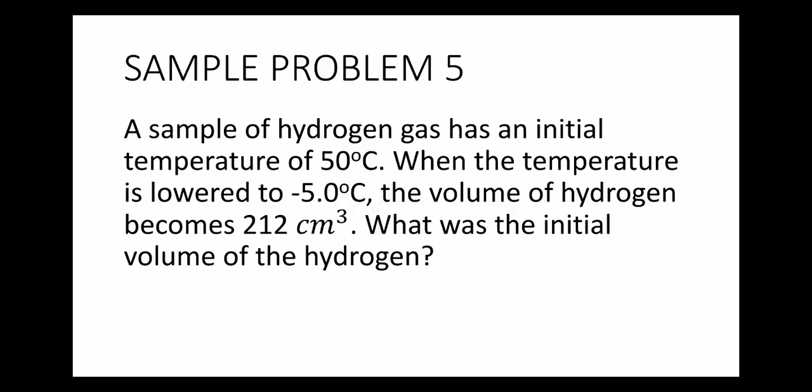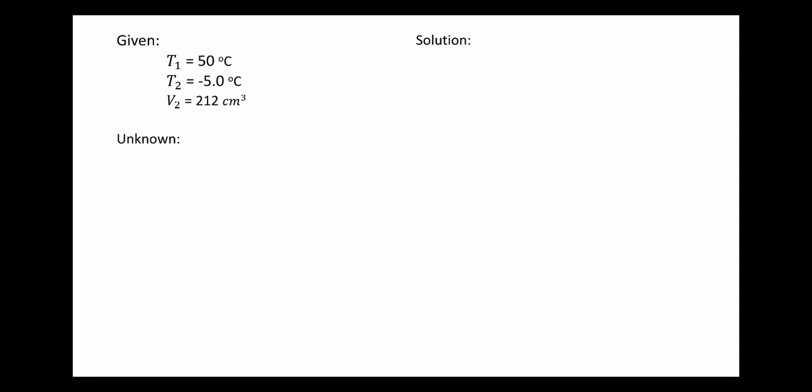For the last problem: a sample of hydrogen gas has an initial temperature of 50 degrees Celsius. When the temperature is lowered to negative 5 degrees Celsius, the volume of hydrogen becomes 212 cm³. What was the initial volume? Given: T1 is 50 degrees Celsius, T2 is negative 5 degrees Celsius, V2 is 212 cm³. The unknown is V1, the initial volume.